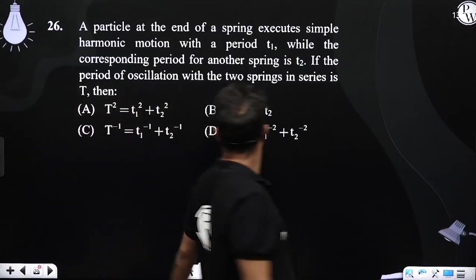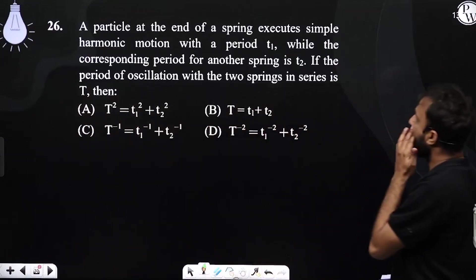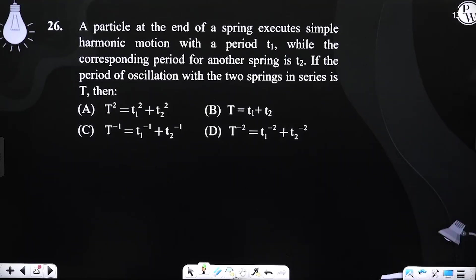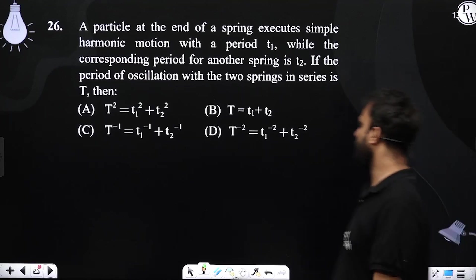Question number 26 is saying, a particle at the end of a spring executes simple harmonic motion with the time period t1, while the corresponding period of another spring is t2. If the period of oscillation of these two springs in series is t, then